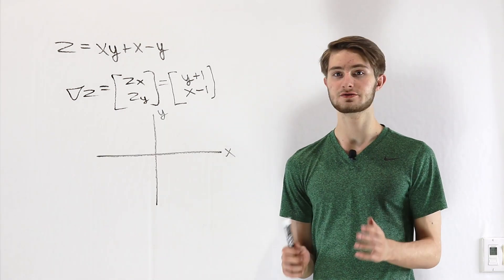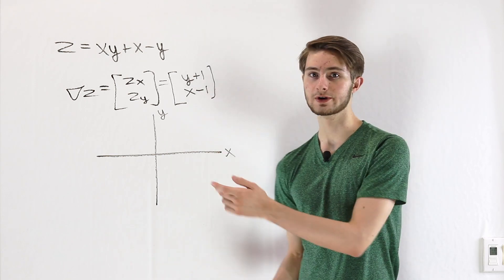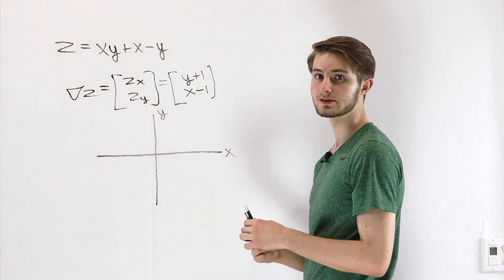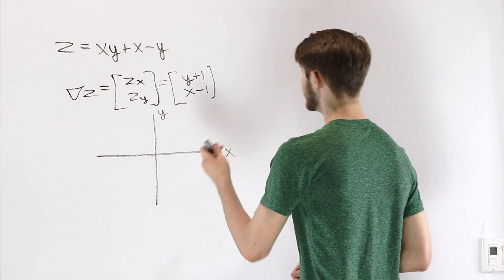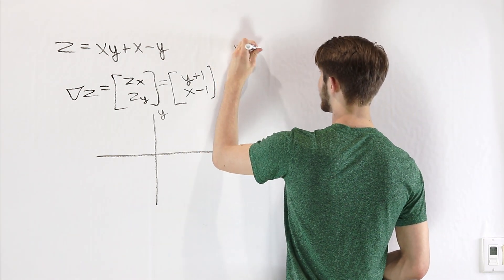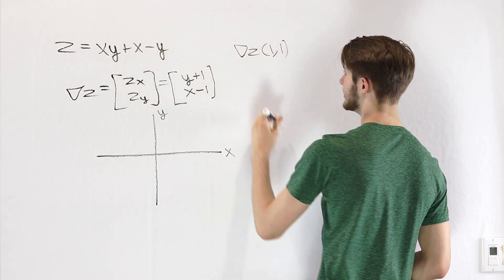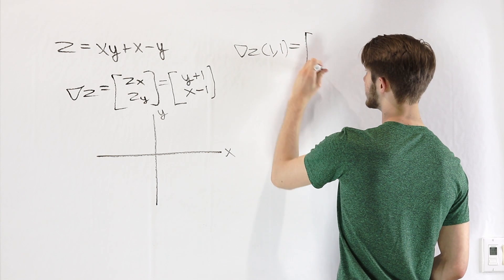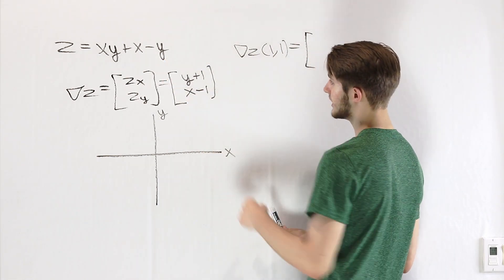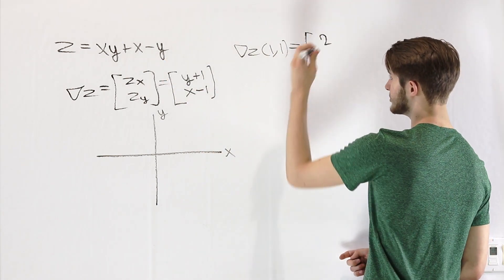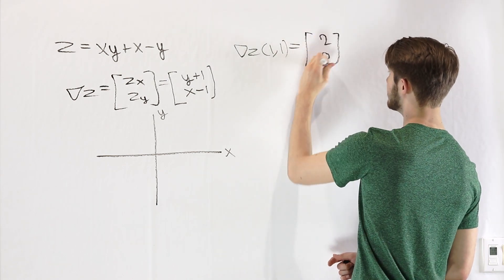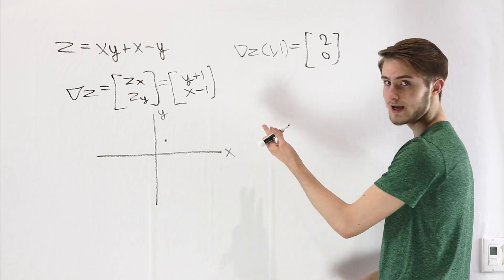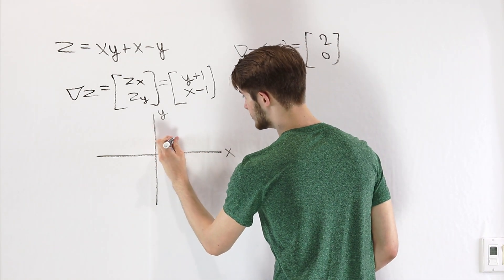It's important to be able to visualize vector fields on a 2D graph, so let's go through an example using the gradient of z as a vector field. We take a look at some input values — for example, the gradient of z evaluated at the point (1, 1) gives us an x component of 1 plus 1, which is 2, and a y component of 1 minus 1, which is 0. So at the point (1, 1) the output of our vector field is the vector (2, 0).